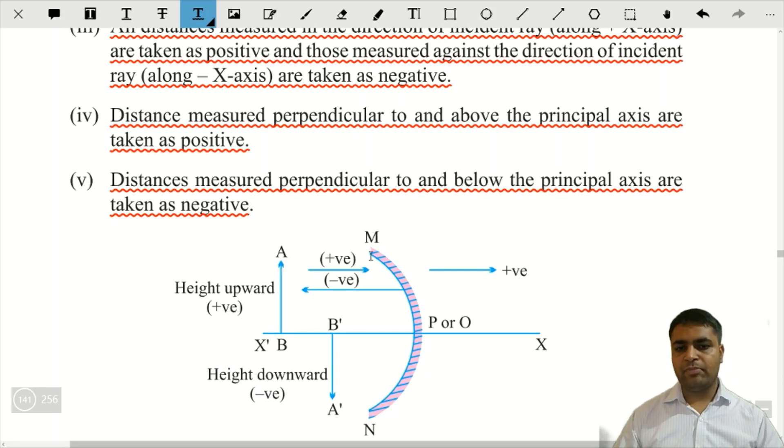Yeh diagram dekhiye. Yeh diagram mein, yeh mirror hai. Kaisa mirror hai, yeh? Concave mirror hai. This is the pole. And yeh principal axis hai.